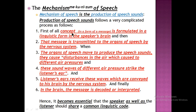First of all, a concept is formulated in the linguistic form in the speaker's brain. This is the first step: the speaker gets a concept in the mind in a linguistic form. Then that concept, in the form of a message, is transmitted to the organs of speech by the nervous system. The message is transmitted to the organs so that they can produce the sounds. The organs of speech — the third step — move to produce the speech sound. They start producing the sound, and for that they cause some disturbance to the air.